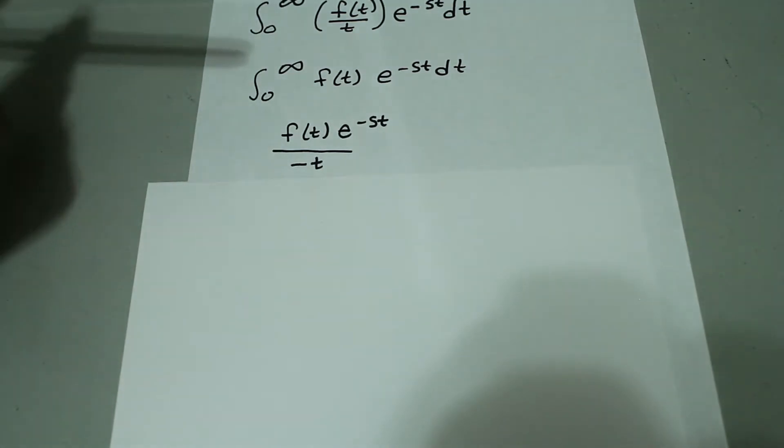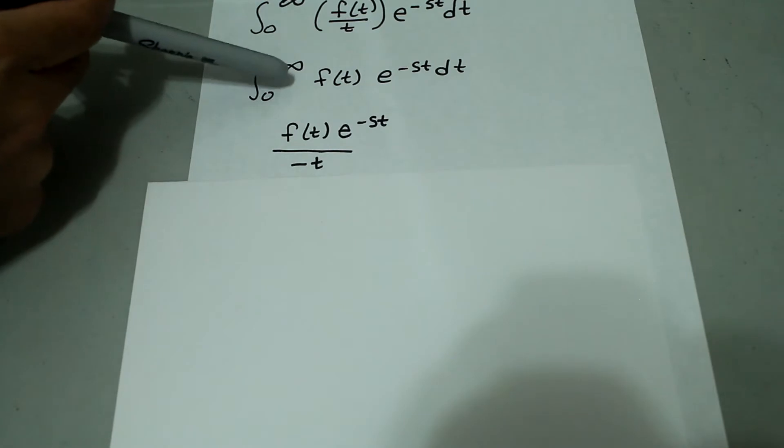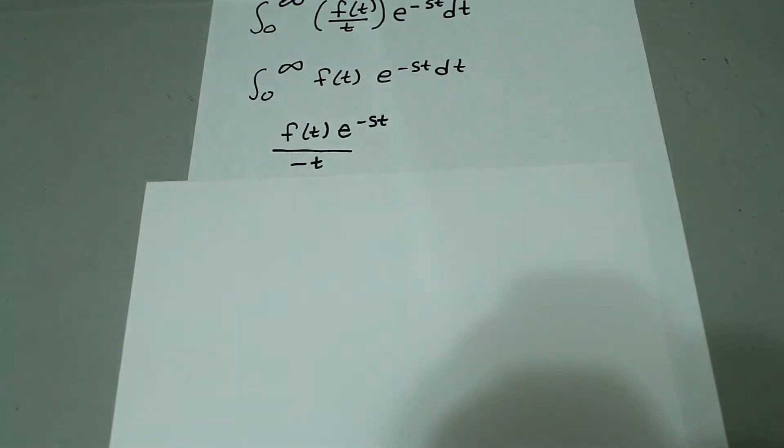This looks like this except with the negative sign. So, we know we're going to have to integrate the Laplace transform of f of t.